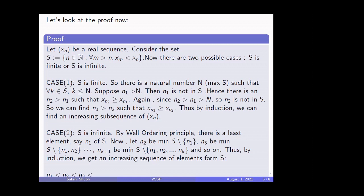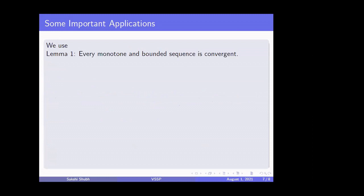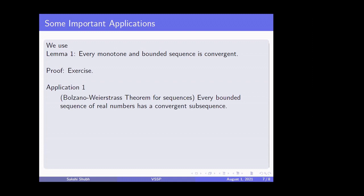Whenever we discuss an important theorem, there should be important applications — otherwise why state it? We will now discuss two important applications of this theorem. But first, I'll use a lemma in the proofs: Lemma 1 — every monotone and bounded sequence is convergent. You can try its proof; it's a simple proof and I'll leave it as an exercise. The first application is the Bolzano-Weierstrass theorem for sequences. It says that every bounded sequence of real numbers has a convergent subsequence.